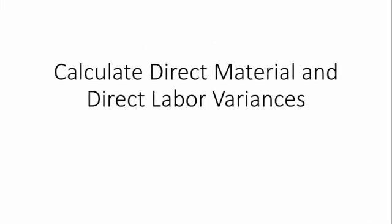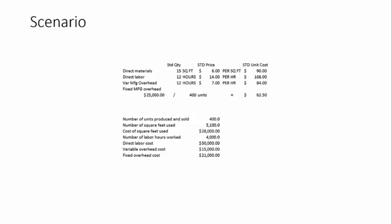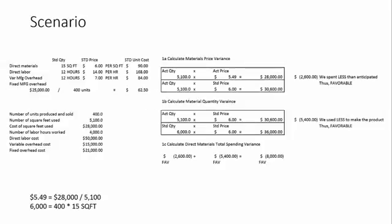Welcome back. In this video we will be looking at calculating variances — specifically direct material and direct labor variances. Here is our scenario. We have several pieces of information giving us standard quantities, standard prices or rates, as well as actual information. At the bottom are our actual numbers: we've actually produced 400 units, and it takes a certain amount of square feet to build those.